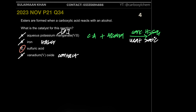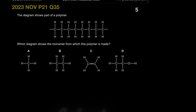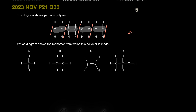The next MCQ shows part of a polymer and asks for its monomer — it's an addition polymer. To identify the monomer, put a cut after every two carbons in the chain. Between two cuts you have two carbons, and because it's an addition polymer, the single bonds used to extend the chain reform as a double bond. So the monomer has a carbon-carbon double bond — it's essentially ethene.